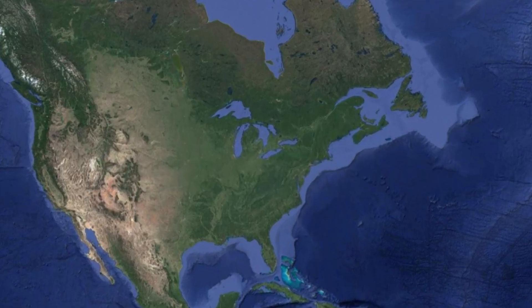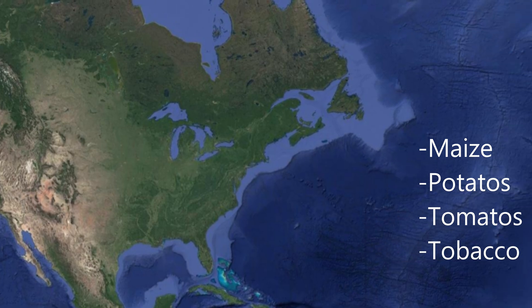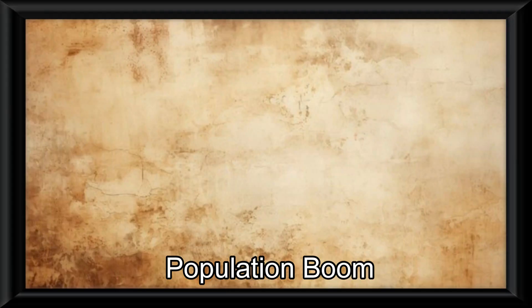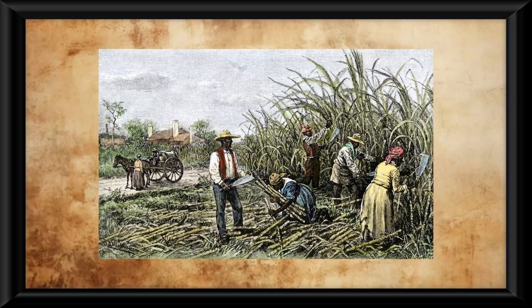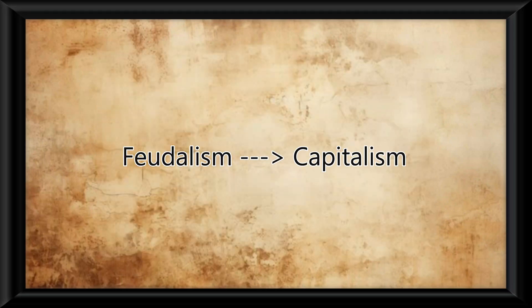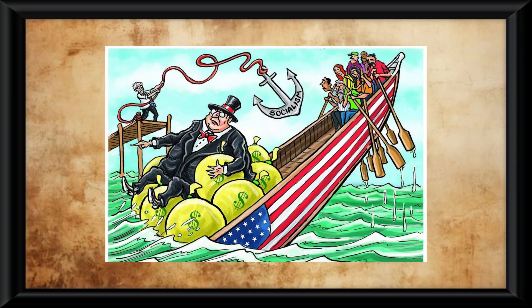The Americas had revolutionary crops like maize, potatoes, tomatoes, and tobacco that got transferred to Europe. The influx of these foods to Europe caused there to be a population boom, and the transfer of goods allowed for Europe to shift from an economic system of feudalism, where land was owned by nobles and worked by peasants, to capitalism, where trade and industry are controlled by private owners for profit.